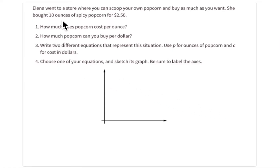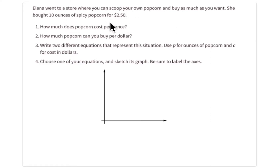Here's the setup. Elena goes into a store and wants to buy some popcorn. She bought 10 ounces of spicy popcorn for $2.50. Now we're going to look at that relationship in two ways — two graphs for each relationship and two equations for each relationship.